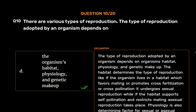Physiology is also a determining factor for sexual or asexual reproduction. For example, if the male or female sex organs mature at different times, the unfertilized gametes develop into an individual by parthenogenesis, which is a form of asexual reproduction. If the male or female sex organs mature at the same time, sexual reproduction takes place. Genetic makeup also determines the type of reproduction — somatic cells favor asexual reproduction while germ cells favor sexual reproduction.